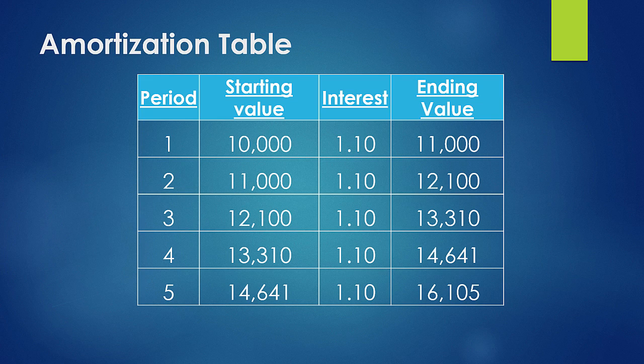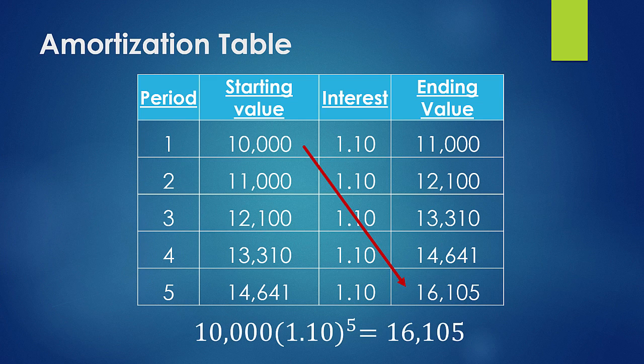This mathematical process is the same thing as raising your risk to the power of the number of periods. You can either go through and create an amortization table, or you can simply say $10,000 times 1.1 raised to the power of 5 equals $16,105. You can do either way — mathematically it's the same thing. At the end of 5 periods, you would receive the $10,000 plus interest of $6,105 to compensate you for holding 10% risk for 5 consecutive periods.